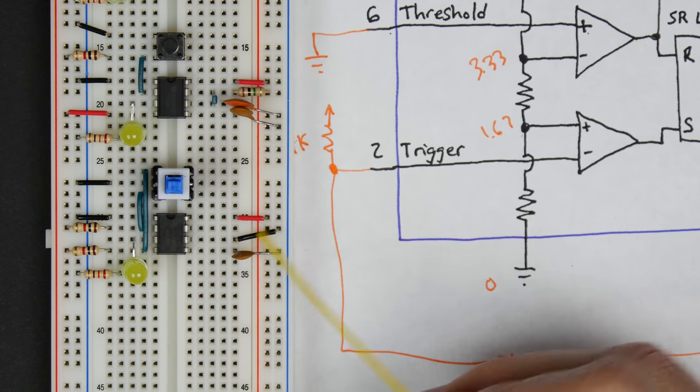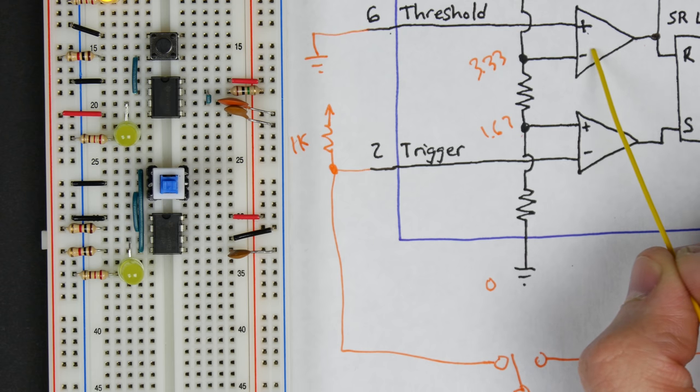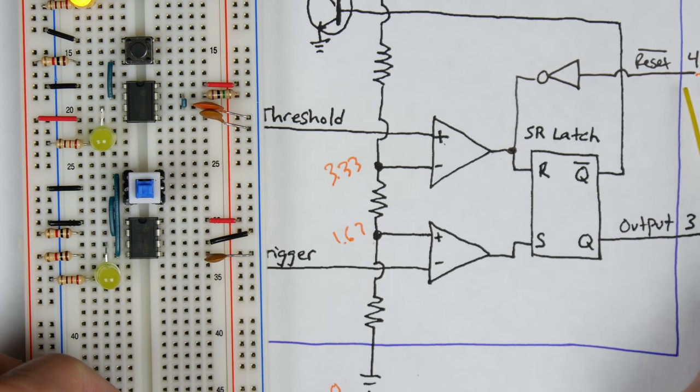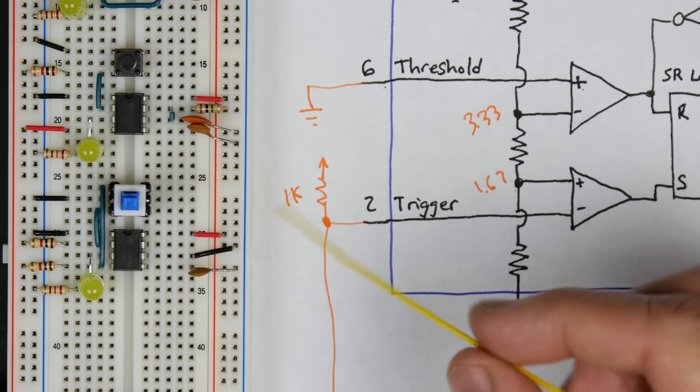And then pin 6 is our threshold. So we have that just at ground. So this comparator is never going to be on. So we don't have this resetting this way. The only way we're resetting the latch is through our reset pin. So threshold is to ground.